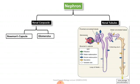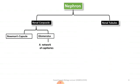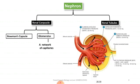As shown in the diagram, the renal corpuscle is indicated by a red circle. This renal corpuscle has two main parts: the glomerulus and the Bowman's capsule. The glomerulus is a network of capillaries. Blood enters the glomerulus through the afferent arteriole, which has a larger diameter.